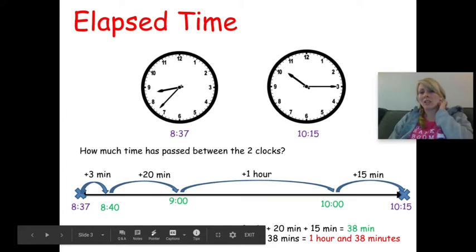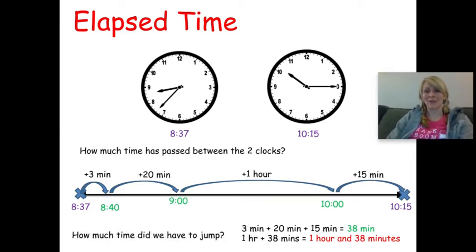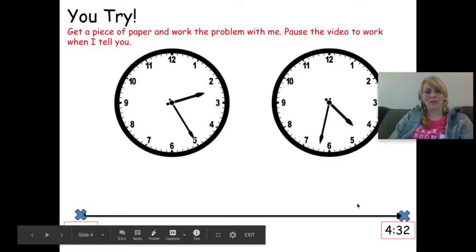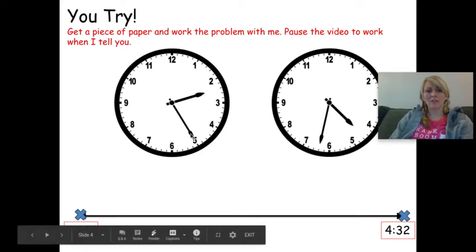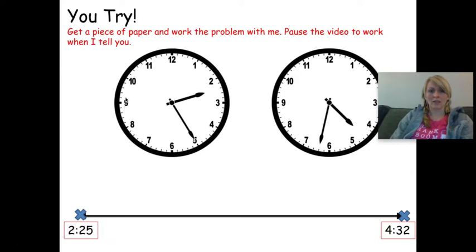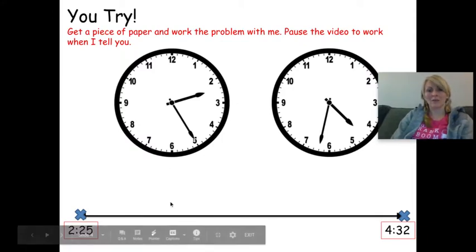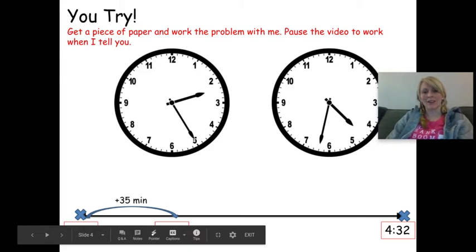Now I want you to try this next one with me. We're figuring out elapsed time from two twenty-five to four thirty-two. From two twenty-five, it's already a multiple of five — how many minutes to get to three o'clock? Counting by fives: five, ten, fifteen, twenty, twenty-five, thirty, thirty-five — so a thirty-five minute jump gets us to three o'clock. Let's mark that jump on our number line, landing at three o'clock.